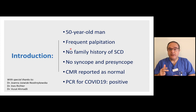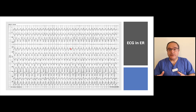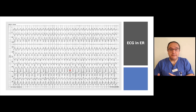The patient has no family history of sudden cardiac death, no syncope, and no pre-syncope. He presented to another hospital with wide QRS complex tachycardia. The MRI was reported to be normal — we will later look at the MRI of this patient. On the ECG, we see a wide QRS complex tachycardia with left bundle branch block pattern and superior axis.